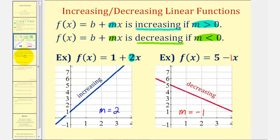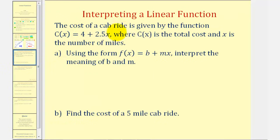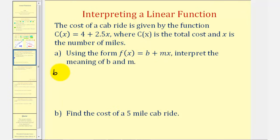Now let's interpret a linear function. The cost of a cab ride is given by the function c(x) = 4 + 2.5x, where c(x) is the total cost and x is the number of miles. Using the form f(x) = b + mx, we want to interpret the meaning of b, the y-intercept, and m, the slope. Notice that b, the constant term, is positive four, and m, the coefficient of x, is 2.5.